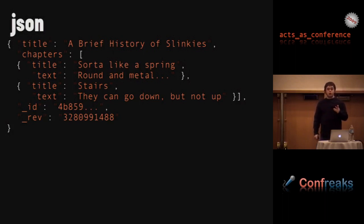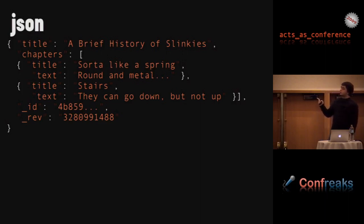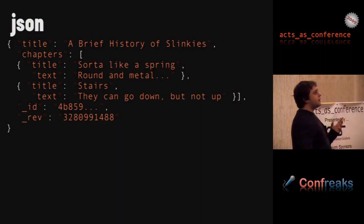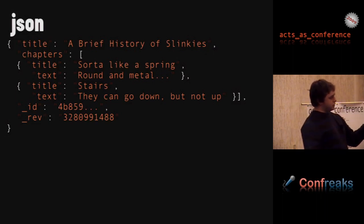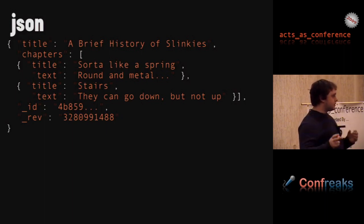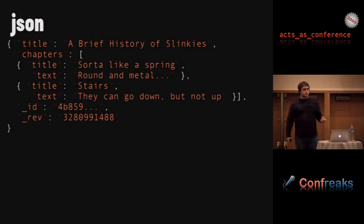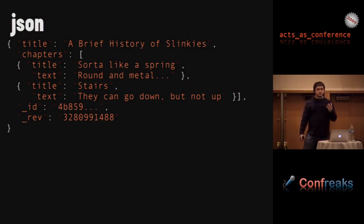Similarly, a blog post and all its comments could be in the same document. This is actually the reason I started using CouchDB several months ago — I had a main model the user was interacting with that had many sub-items, like a book has many chapters, and I needed to do versioning where if any chapter or any information about the book was touched, I needed to create another revision. With a relational database that's really painful because you have to track all those different things, but with a document database when they're all in the same place you can just do another revision very easily.